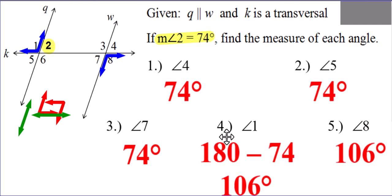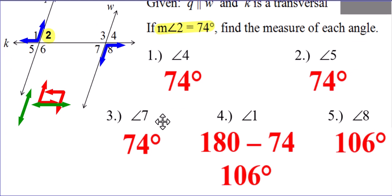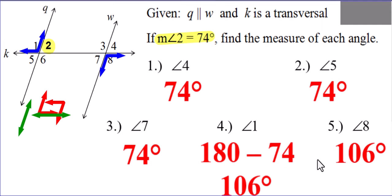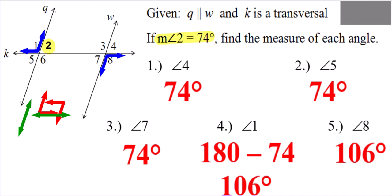Now, some of you are noticing that when there are two parallel lines with one transversal, there's going to be one type of acute angles and one type of obtuse angles. But that's not always going to work if there's more than one transversal. I will admit, if there's only one transversal — one line that intersects the parallel lines — then yes, there's only two possible answers, one of which will be acute, the other of which will be obtuse. That is true.